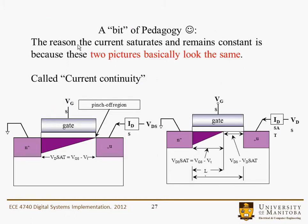Here's a bit of pedagogy. The reason the current saturates and remains constant is because these two pictures look the same. It's easy to convince ourselves of current flowing in the linear region, and then we hit this pinch-off point. The figure is essentially the same — the only difference is there's a region under the gate where the layer isn't inverted, but the electrons just transport through it ballistically.